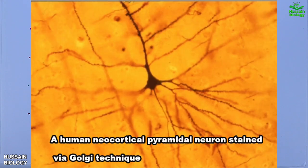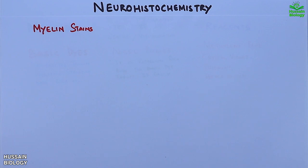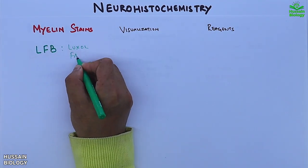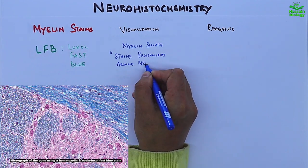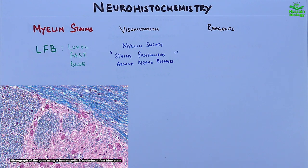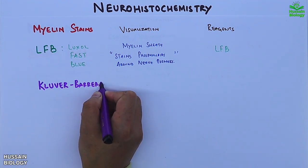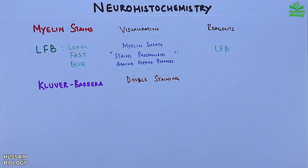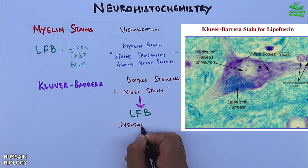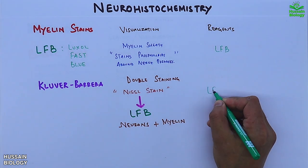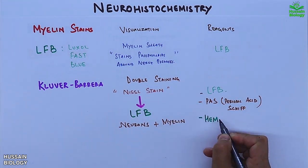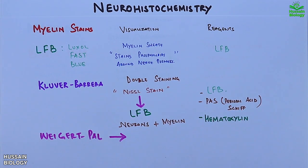Now moving towards the myelin stains, which are used to visualize the myelin sheath. First we have LFB — Luxol Fast Blue — used to visualize the myelin sheath; LFB stains the phospholipids around the nerve fibers. Second is the Klüver-Barrera method, a double staining technique where we first use Nissl stain followed by LFB, staining neurons first and then myelin, using reagents like LFB, PAS (periodic acid-Schiff), and hematoxylin. Third is the Weigert-Pal method, used to stain the myelin sheath by using iron hematoxylin as a reagent.